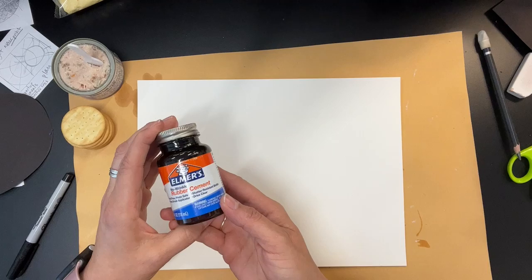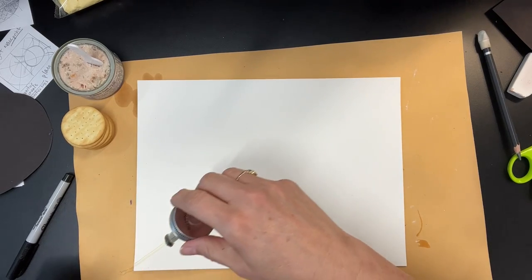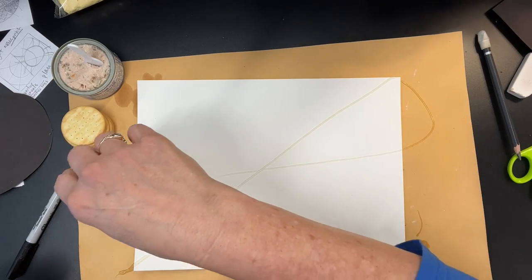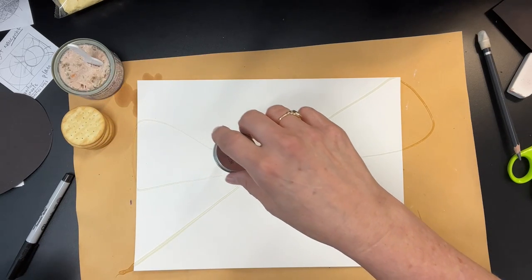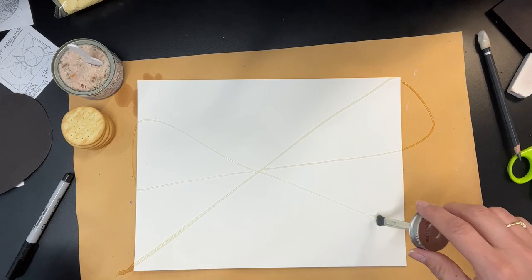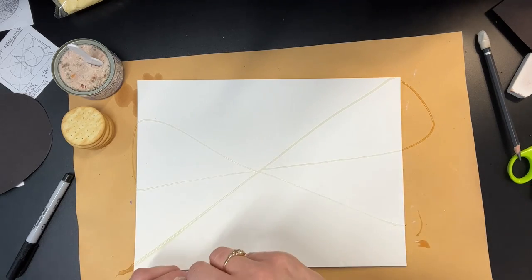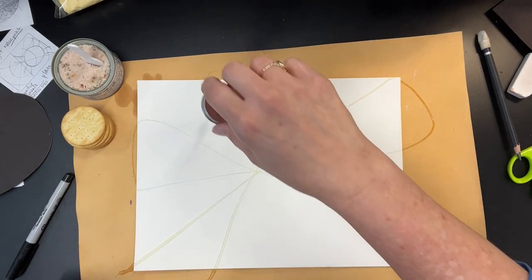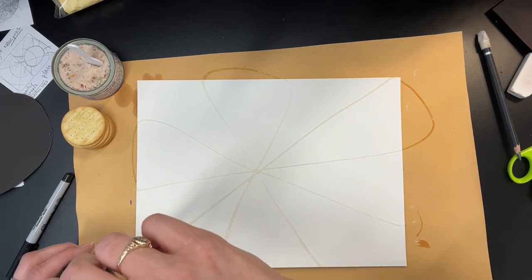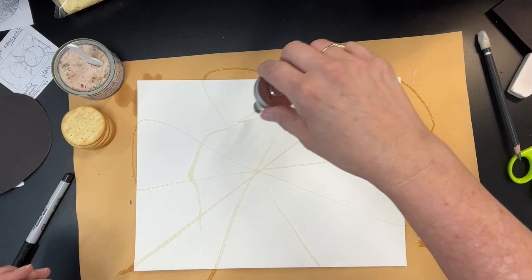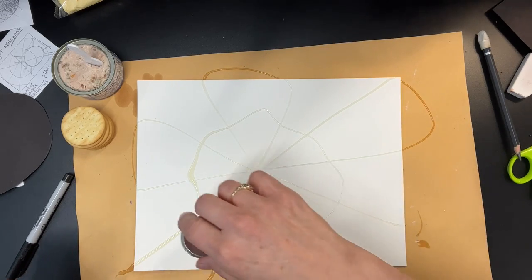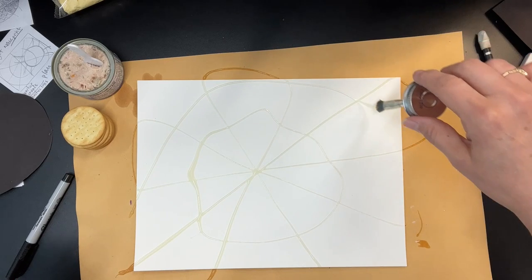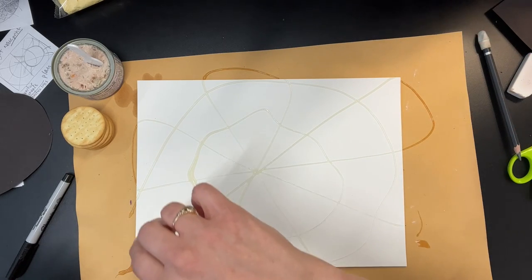We will start with rubber cement. Don't go crazy at this point. We're just making our spider web lines. Once you have all the straight lines that meet in the middle, you can make some circles that go around the center. If you get drips and drizzles and things get a little wonky, that's totally fine. It makes it even more cool.